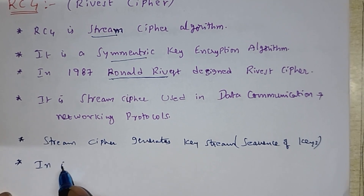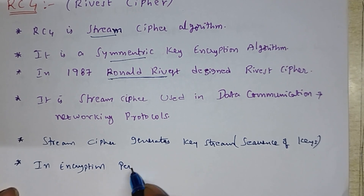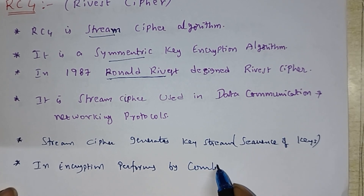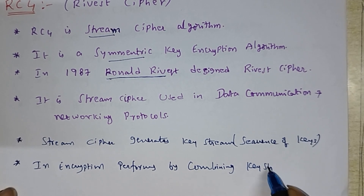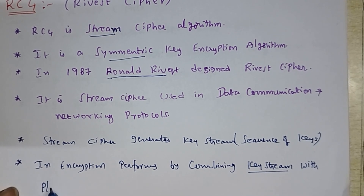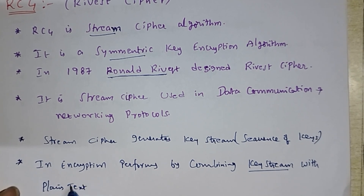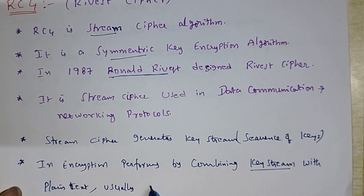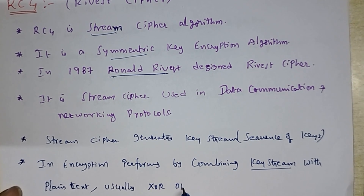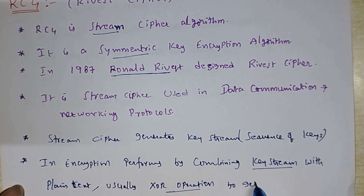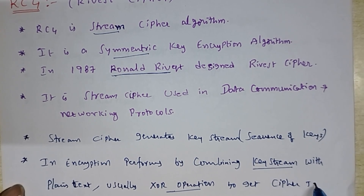In the encryption algorithm, it performs the operation by combining the key stream with the plain text. Usually, it will perform an XOR operation to get the cipher text.